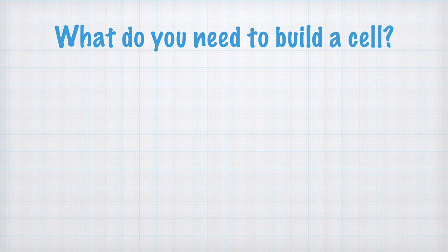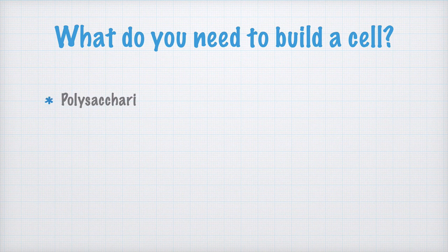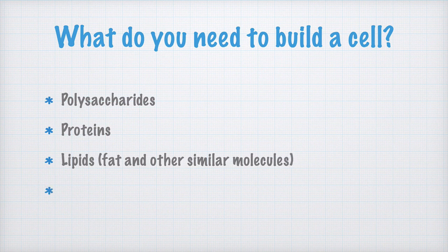But what do you need to build a cell? You need four different types of macromolecules, and I'll explain what each of them is. They are polysaccharides, proteins, lipids, and nucleic acids.